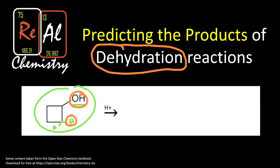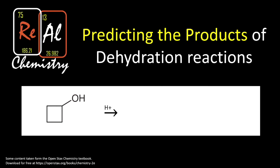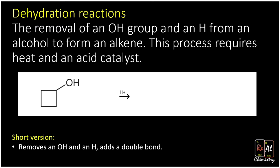Removing those two atoms will leave behind a double bond. The formal definition: dehydration reactions involve the removal of an OH group and an H from an alcohol to form an alkene — a carbon-carbon molecule with a double bond. This process requires heat and an acid catalyst. The short version: it removes an OH and an H and adds a double bond. This is basically the opposite of a hydration reaction.